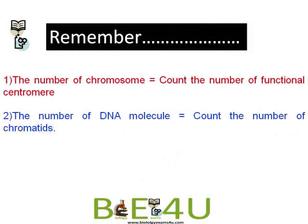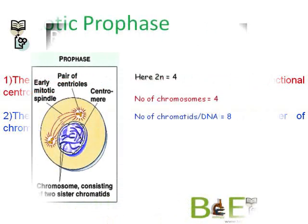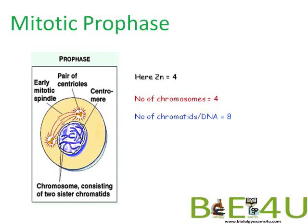To summarize: to count the number of chromosomes, count the number of functional centromeres. To count the number of DNA molecules at different stages of the cell cycle, count the number of chromatids. Now let us take some examples to make this concept clear.